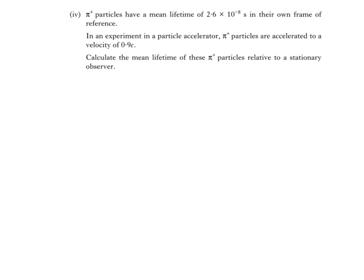Hopefully you'll realize that we're using this equation: t' = t / √(1 - (v/c)²), where t' is the dilated time, and t is known as the proper time. The time of 2.6 times 10 to the negative 8 seconds is the proper time t, since it's measured in the same reference frame as the pi plus particles. The stationary observer is in a different reference frame, so would measure a greater or dilated time t'.